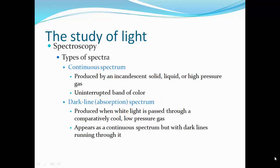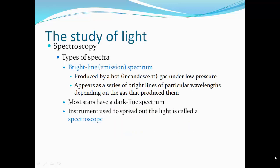Types of spectra: continuous spectrum, produced by incandescent solid, liquid, or high-pressure gas under an uninterrupted band of color. A dark-line absorption spectrum, produced when white light is passed through a comparatively cool, low-pressure gas. It appears as a continuous spectrum with dark lines running through it. A bright-line emission spectrum, produced by hot incandescent gas under low pressure. It appears as a series of bright lines at particular wavelengths depending on the gas that produces them. Most stars have a dark-line spectrum.